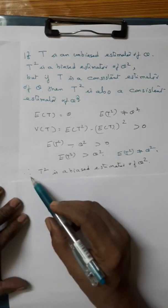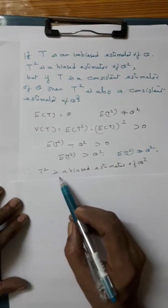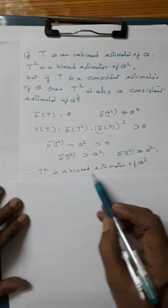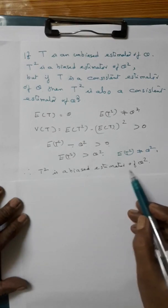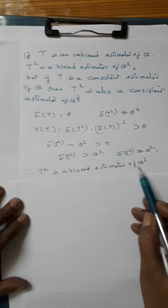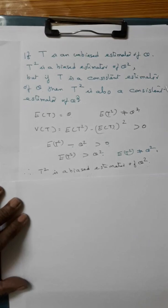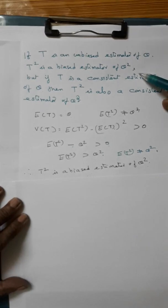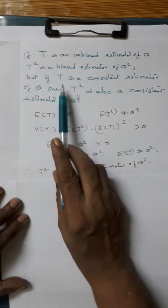Therefore, T squared is a biased estimator of theta squared. So the first part is proved. Now we are moving to the second part.